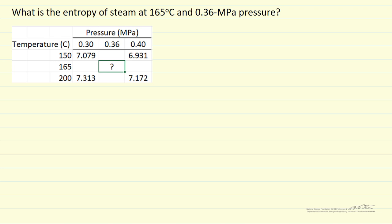So here we're interested in the entropy at 165 and at 0.36 MPa. A particular table I'm using only has values of 0.3 and 0.4 MPa. So we can read these four values from the table, but what we want is this value in the box.